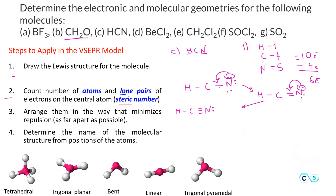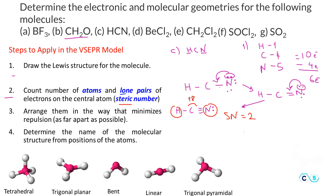For step 2 of HCN, the steric number of carbon is 2: two bonded atoms and no lone pairs (the triple bond does not affect the count). With steric number 2, the two units repel to 180 degrees, corresponding to linear geometry. Linear is both the electronic and molecular geometry of hydrocyanic acid.